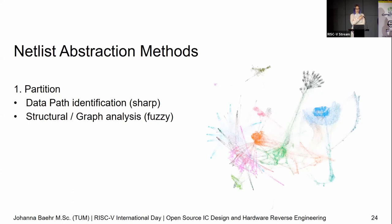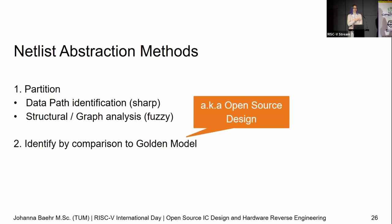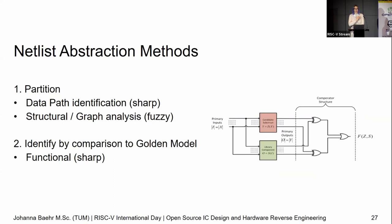The second thing is a bit more fuzzy — it's called structural or graph analysis. This right here is actually a RISC-V core visualized as a graph — you've probably never seen it like this before. We see about 250,000 gates: each little dot is a single gate, each connection is a wire. I've highlighted some stuff here, and when you visualize it you can see things that belong together. We can use that for partitioning. Then for identification, we compare against a golden model — and of course in open source design we have that golden model, we just downloaded it from Git.